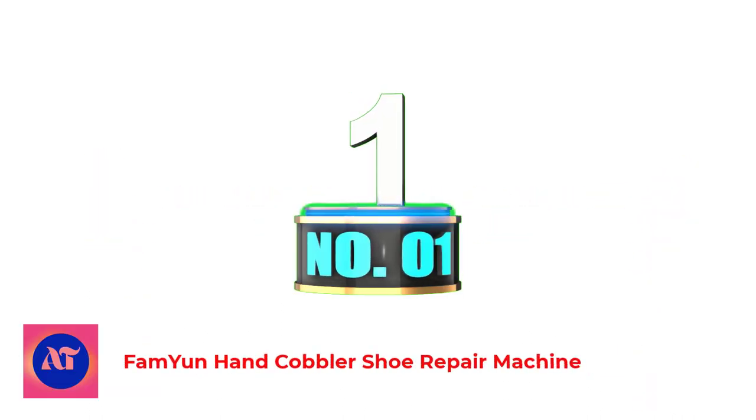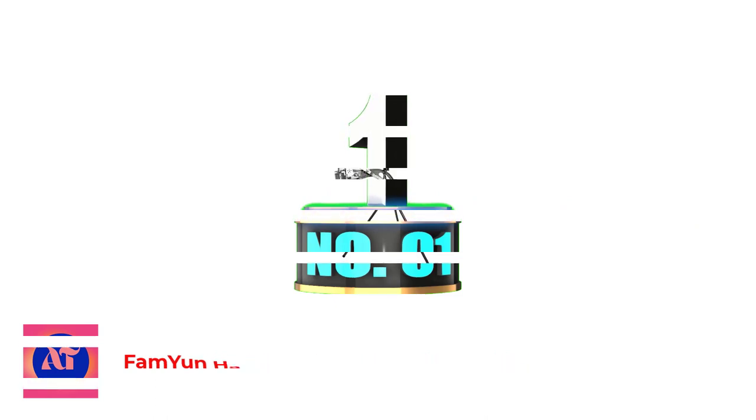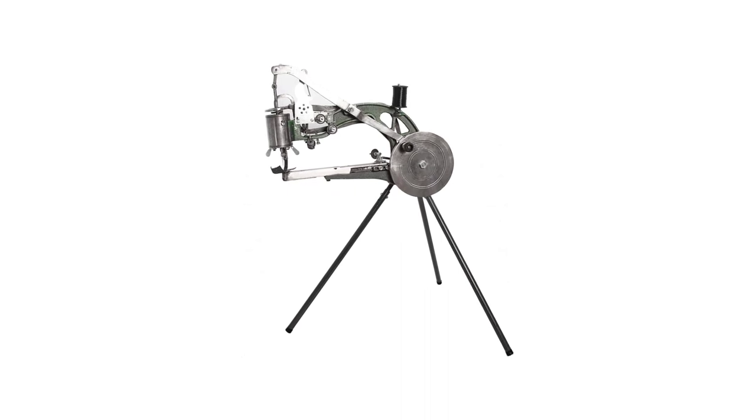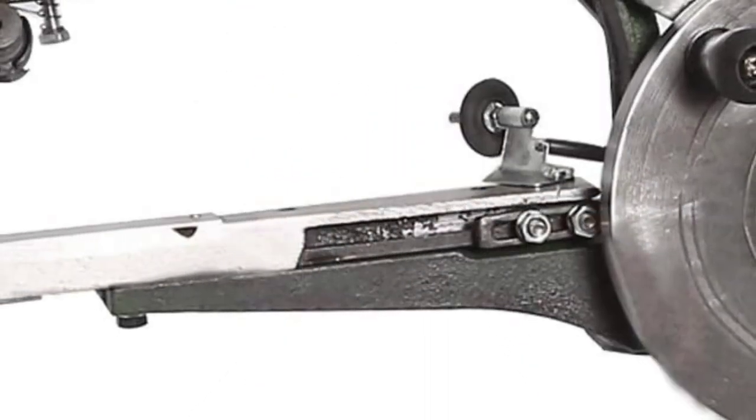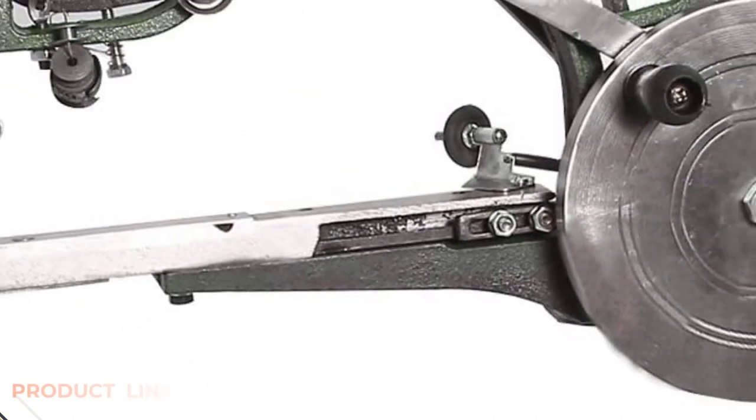Number 1: Famyeon Hand Cobbler Sew Repair Machine. Those who look for an affordable sewing machine often opt for a manual one like this machine from Furion. Apart from just shoes, you can also sew leather, rubber, cloth, and similar materials with impressive sewing quality.